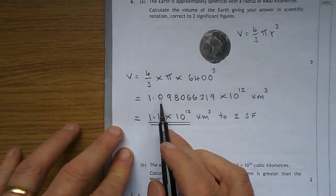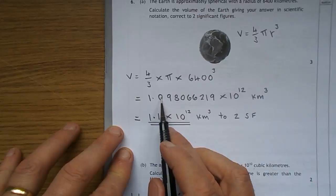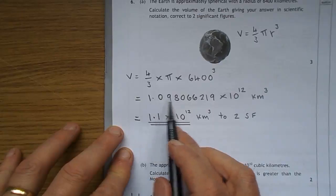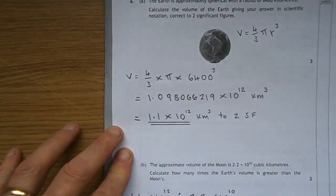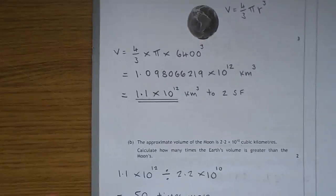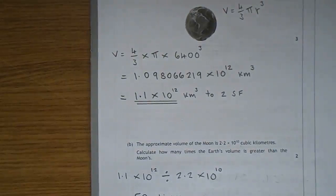The only issue I had was rounding this to two significant figures. There's your first. The next one off is automatically your second. That 9 makes that a 1. You add 1 to it. So, it's 1.1, these all go, times 10 to the power of 12. 1.1 times 10 to the power of 12, cubic kilometres. And that's it, two significant figures.